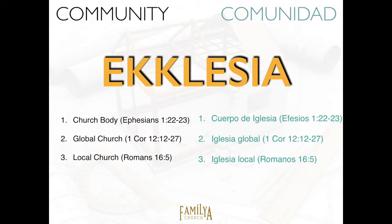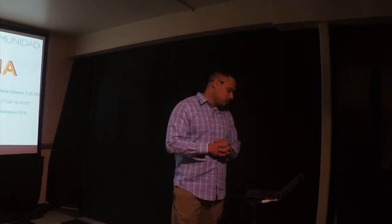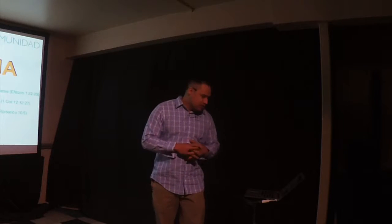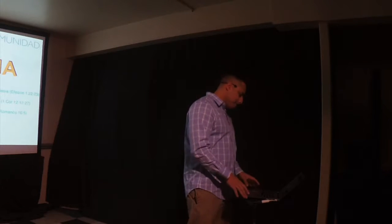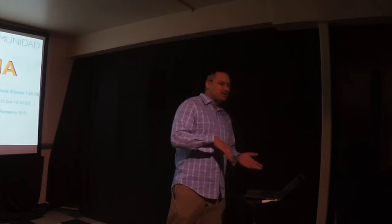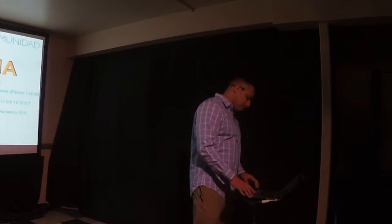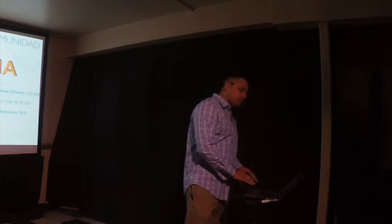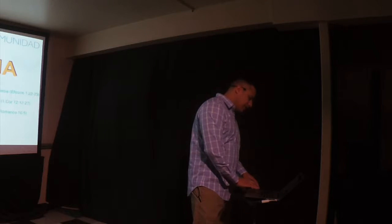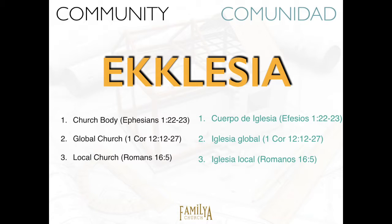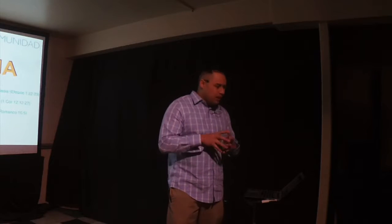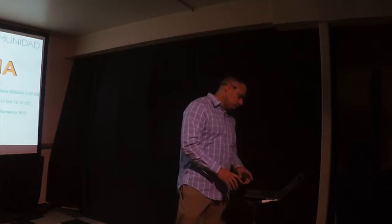But there's three views to the church. Pero hay tres maneras de ver la iglesia. The first one is the body of Christ. La primera es el cuerpo de Cristo. And you can read about it in Ephesians 1, 22 through 23. It talks about the whole body of the church, which includes the congregation, the pastors, the teachers. Que incluye la congregación, pastores, maestros. And it includes previous Christians, current Christians, future Christians. Just the whole body. And in 1 Corinthians 12, 12 through 27, the Bible talks about the global church.